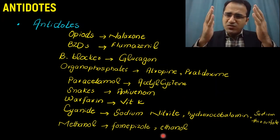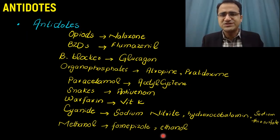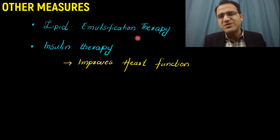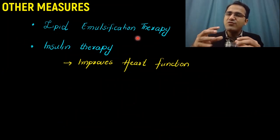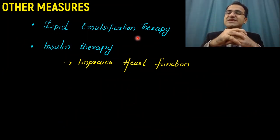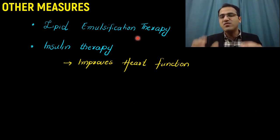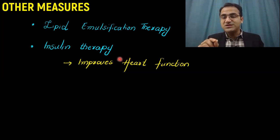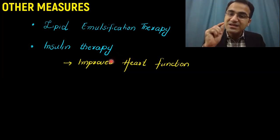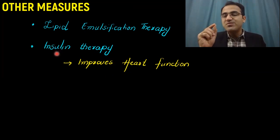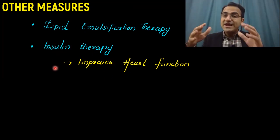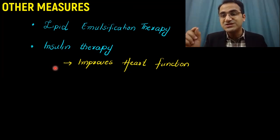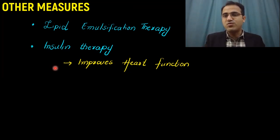I have talked about the management of all these types of poisoning in my toxicology lectures. Other than antidotes, some centres also use lipid emulsification therapy, where certain lipids are given IV to bind and remove poisons from the blood. Insulin therapy is also given in certain cardiotoxic poisons — giving insulin IV can increase metabolism of the heart and improve heart function.